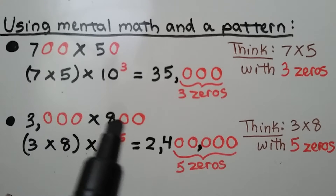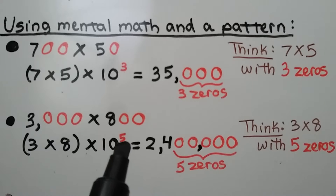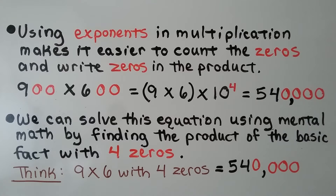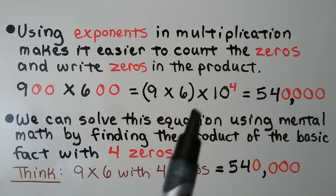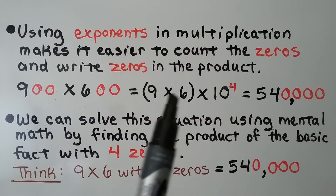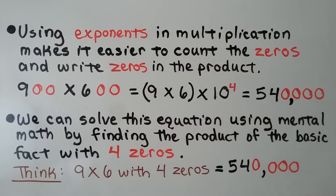We write 24 with five zeros. Using exponents in multiplication makes it easier to count the zeros and write zeros in the product. For 900 times 600, we think 9 times 6. We have four zeros, so it's times 10 to the fourth power. We write 54 with four zeros: 540,000. We can solve this using mental math by finding the product of the basic fact with four zeros — 9 times 6 with four zeros gives 540,000.